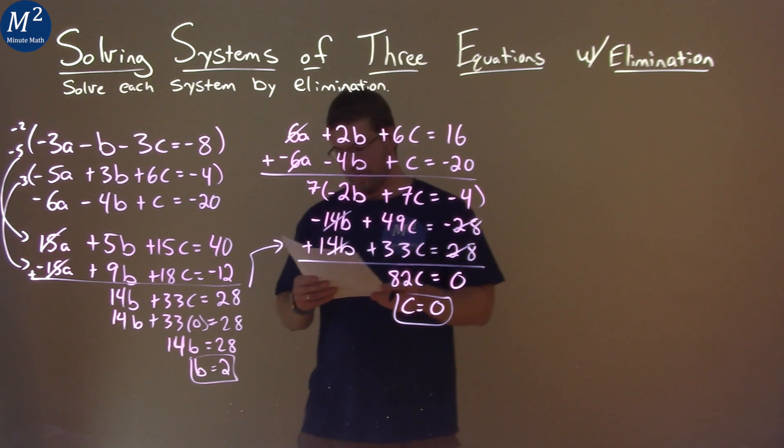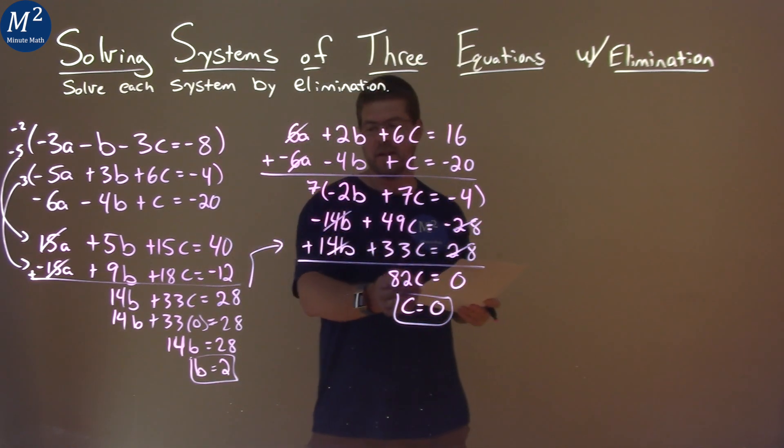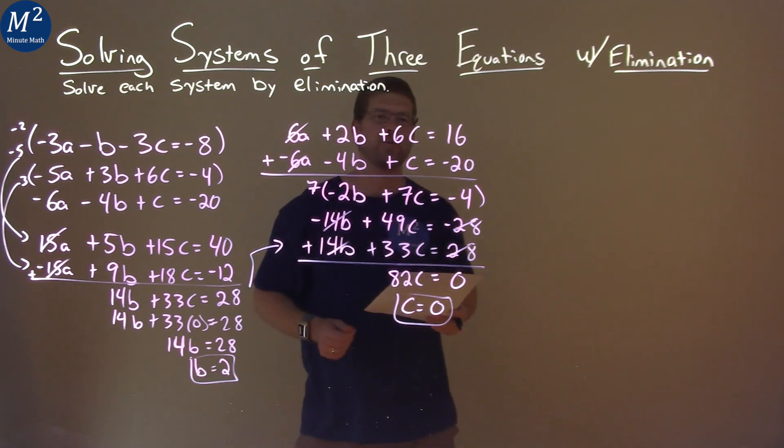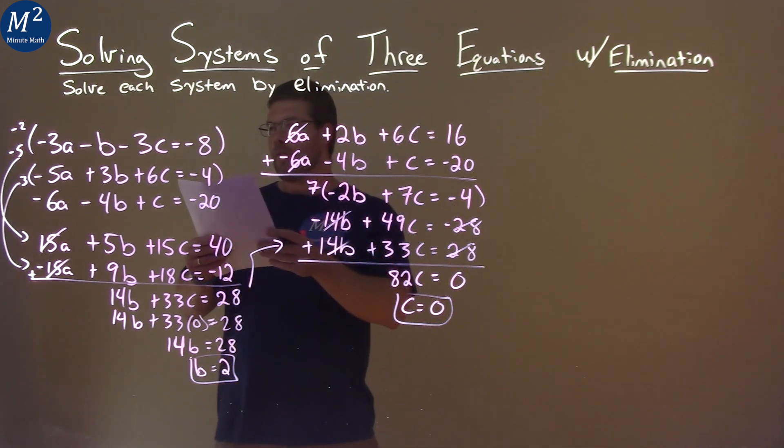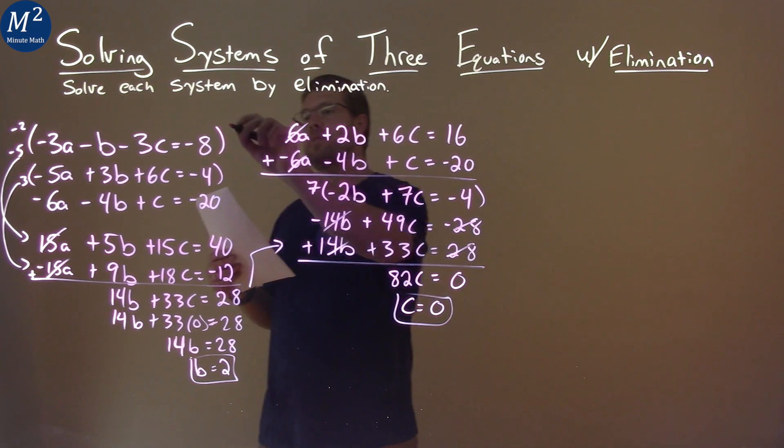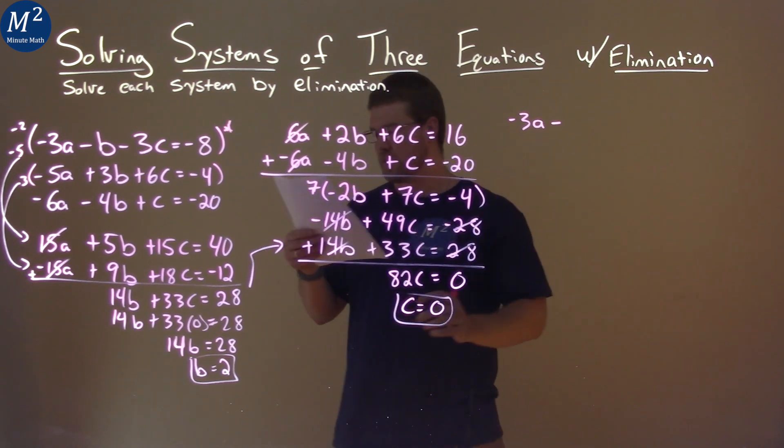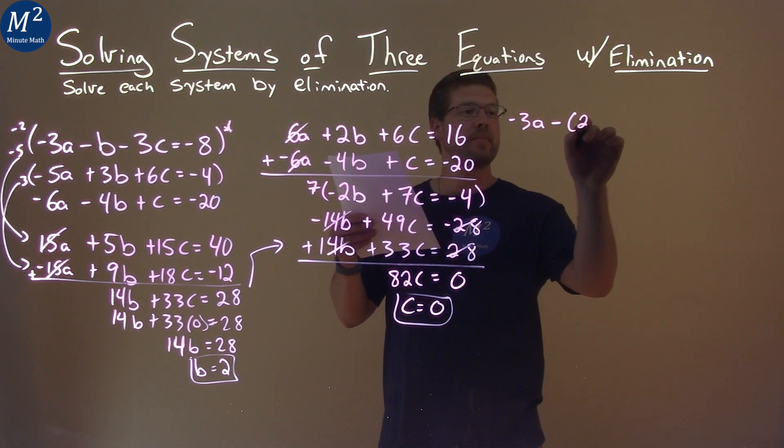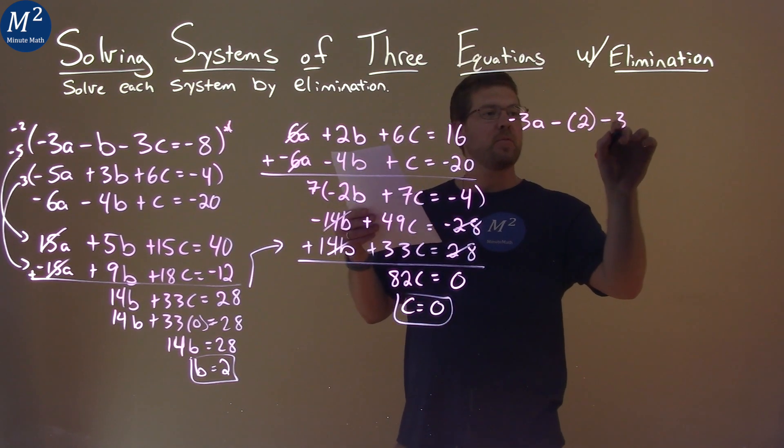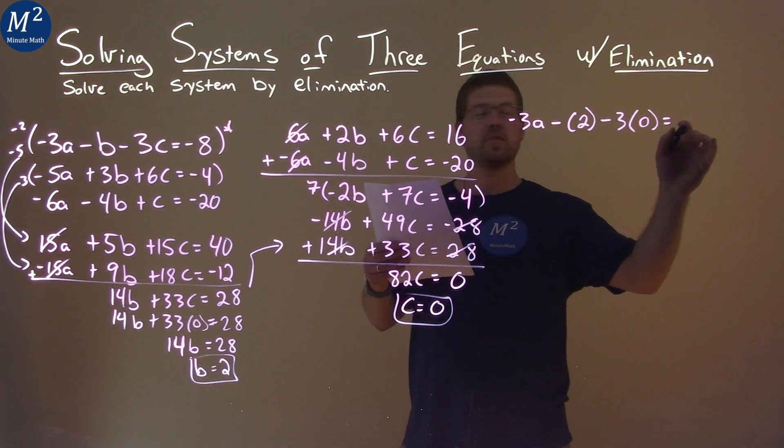We have two values. We need to find a. So we have to take any one of our original equations, and we're going to plug in 2 for b and 0 for c. I used the first one. We take negative 3a minus our b value, which is 2, so we plug 2 in for b, minus 3 times c, which is 0, equals negative 8. And we're going to solve for a.